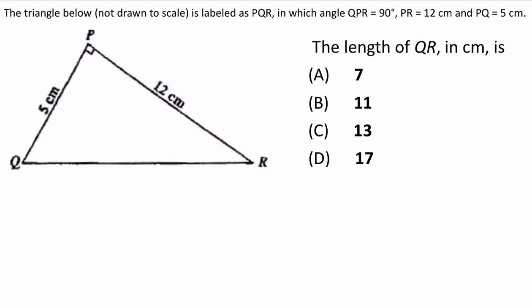In this question, the triangle below, not drawn to scale, is labelled as PQR, in which the angle QPR is equal to 90 degrees, PR is equal to 12 centimetres, and PQ is equal to 5 centimetres. The length of QR in centimetres is—and they give you the options as follows: A being 7 centimetres, B being 11 centimetres, C being 13 centimetres, and D being 17 centimetres.